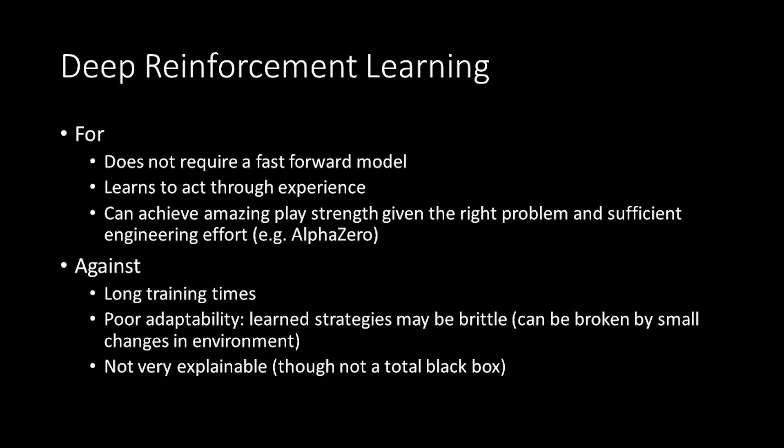These DeepMind achievements are all based on deep reinforcement learning, where you've got a large neural network — modelled very, very roughly on the brain — that you train through experience to get better and better at a particular task. Some drawbacks are relatively long training times and limited adaptability: when you've learned to play Go, that tells you nothing about how to catch a bus. So how can we build things that are more adaptive and more explainable?